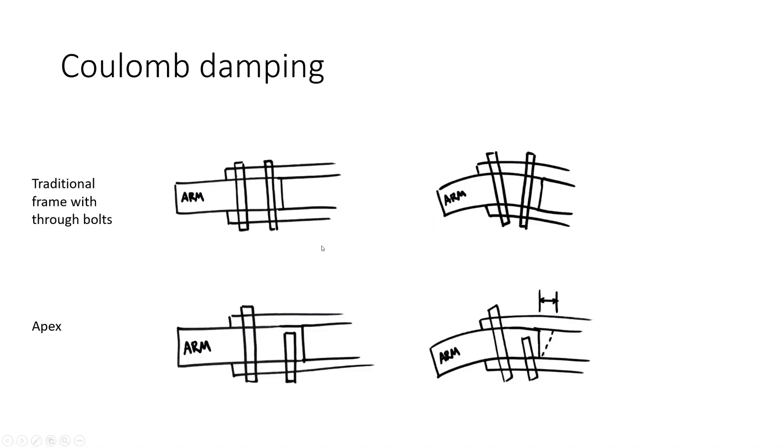Here are my terrible hand drawings to try and illustrate this point. In a traditional frame with through bolts, as the arm bends due to vibration, the top sandwich plate stretches, the bottom plate compresses, and the arm bends. So some parts of it are in tension, some in compression. But as you can see, because these bolts go all the way through both plates, they fix the position of the arm in place during that vibration. So there is very little movement of the top surface of the arm relative to the sandwich plate.